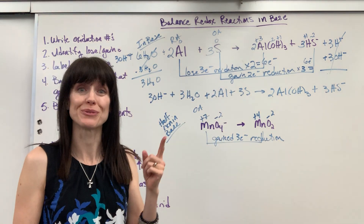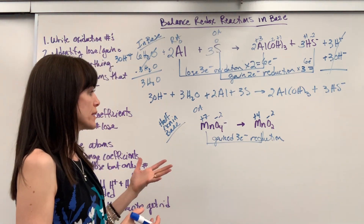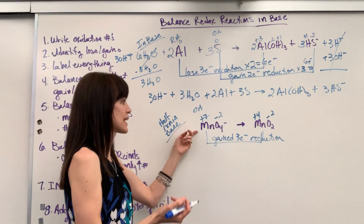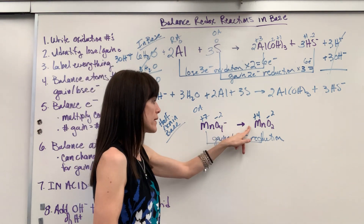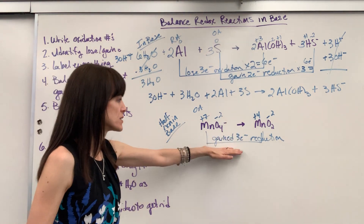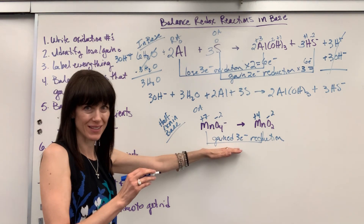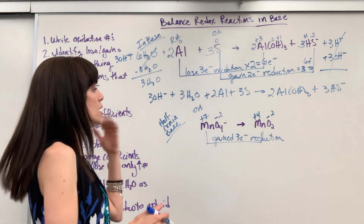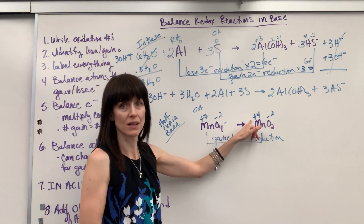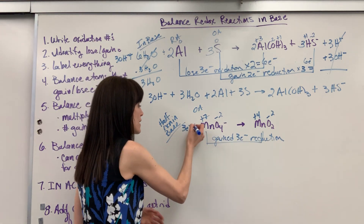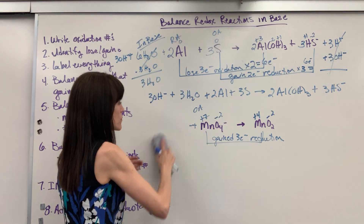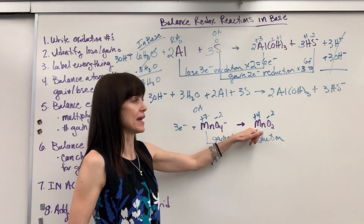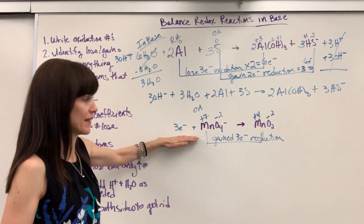Now we need to balance the atoms that are being reduced. In this case, manganese is being reduced: one manganese, one manganese — great. We're gaining three electrons. For reduction, the electrons go on the reactant side. This side has lost seven, that side has only lost four, so we need to add three electrons to the manganese side to get it to MnO₂. So for reduction, the electrons go on the reactant side.